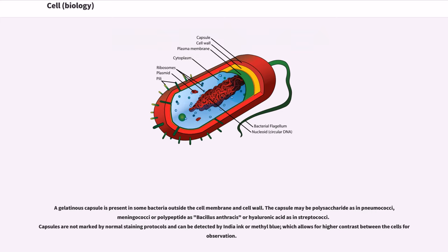A gelatinous capsule is present in some bacteria outside the cell membrane and cell wall. The capsule may be polysaccharide as in pneumococci, meningococci or polypeptide as Bacillus anthracis or hyaluronic acid as in streptococci. Capsules are not marked by normal staining protocols and can be detected by India ink or methylene blue, which allows for higher contrast between the cells for observation.